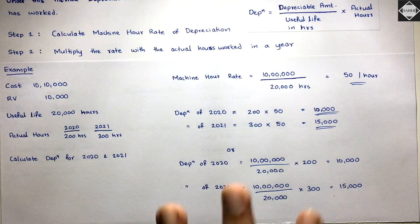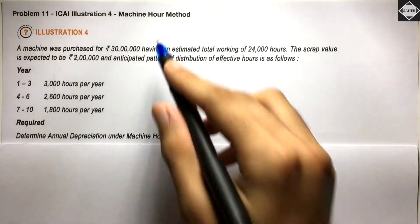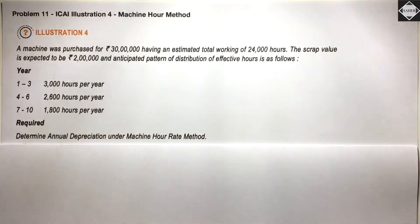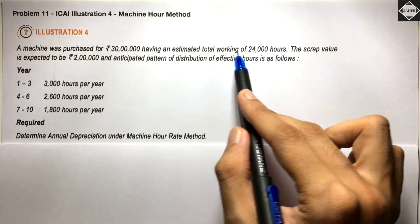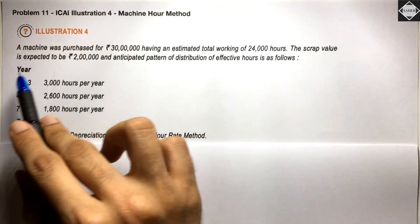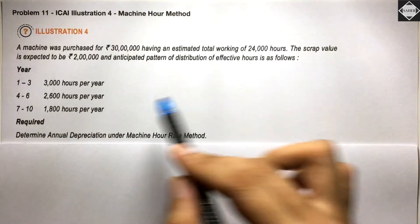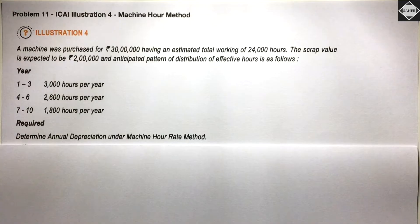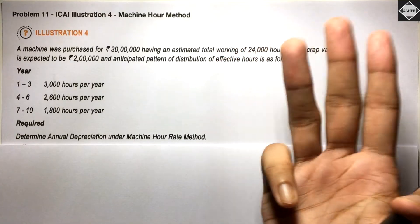Now let's move on to the ICAI illustration — Problem 11 in this series. This is Illustration 4 from the ICAI study material. A machine was purchased for 30 lakhs with an estimated total working of 24,000 hours, and scrap value expected to be 2 lakhs. An anticipated pattern of distribution of effective hours is given: in years 1, 2, and 3, the machine will be used for 3,000 hours each year, totalling 9,000 hours in the first three years.